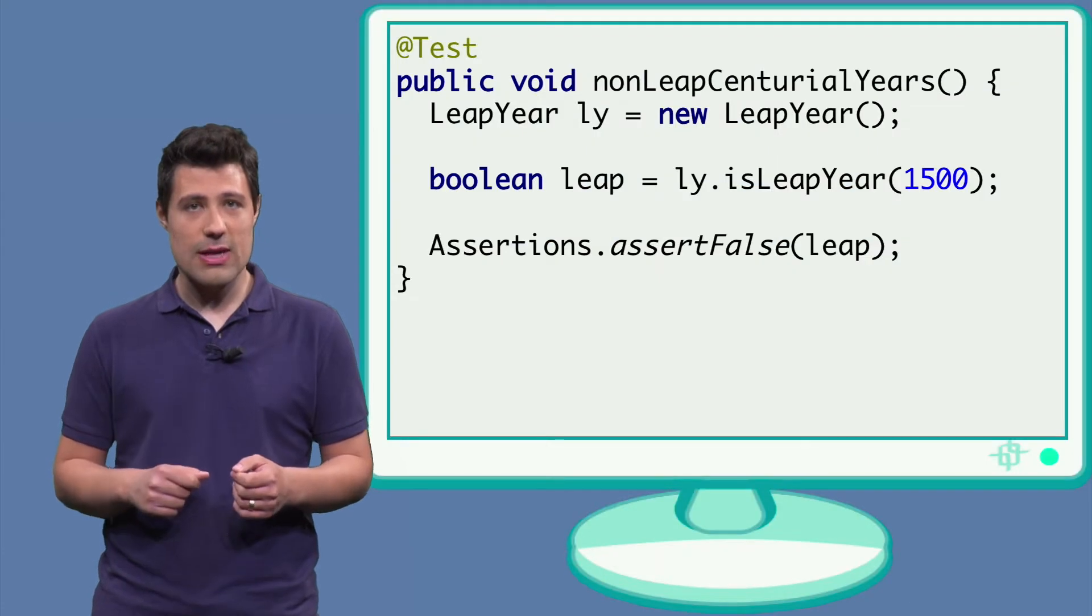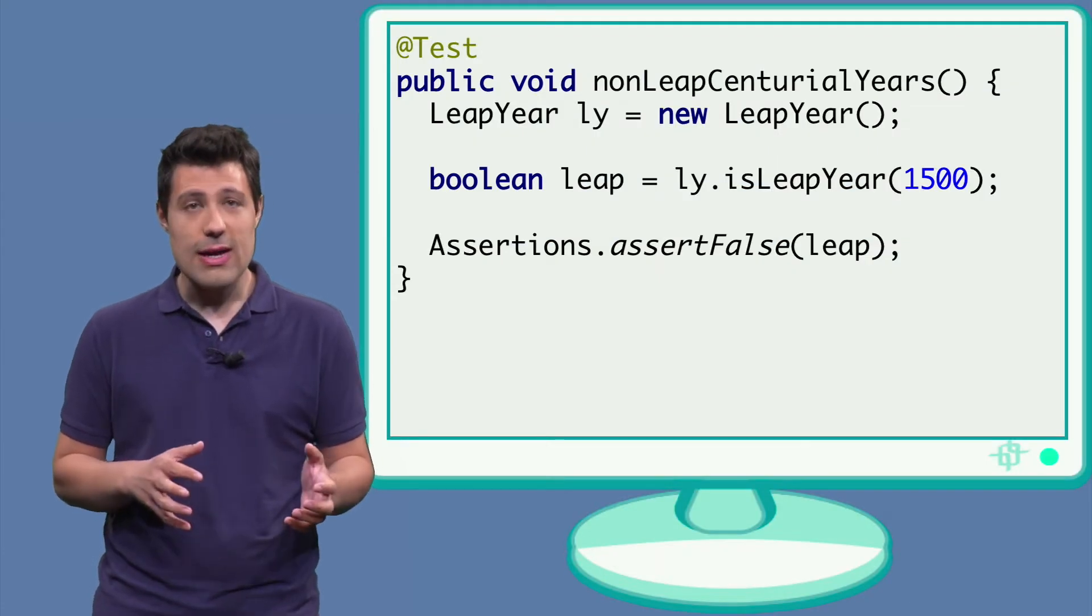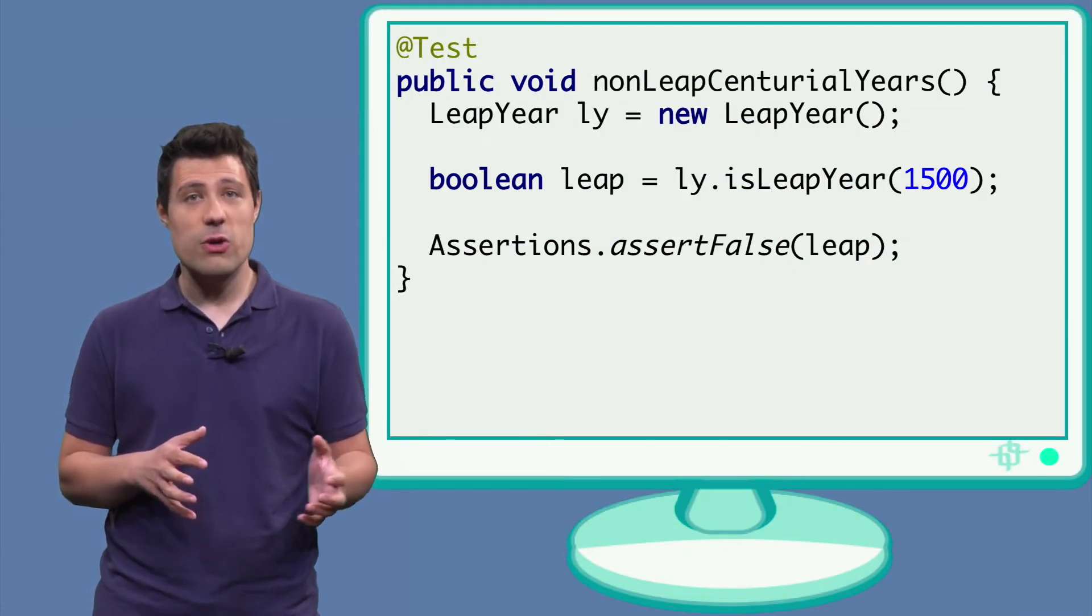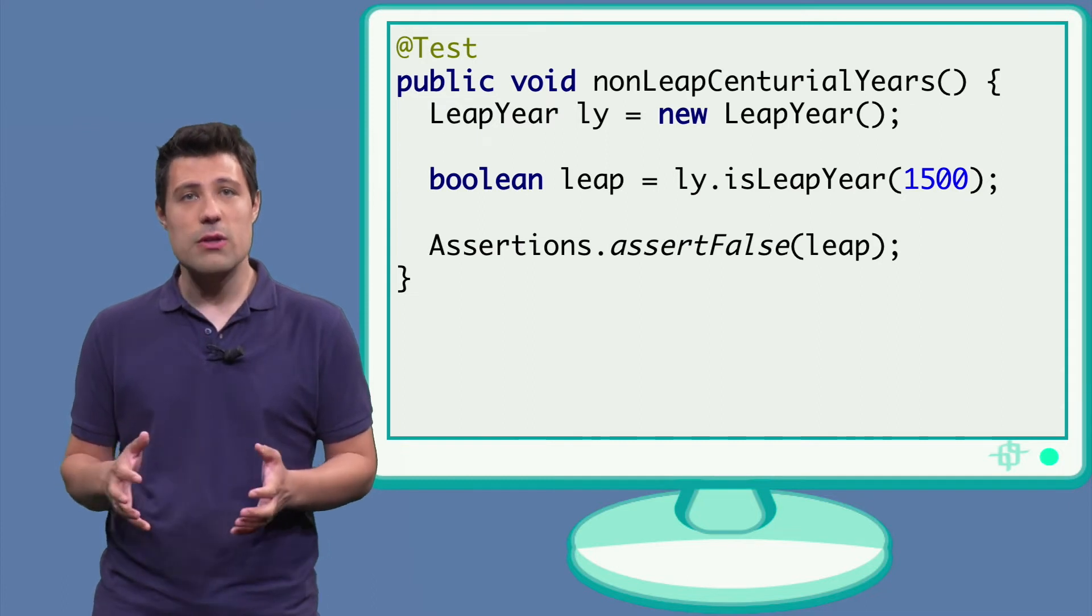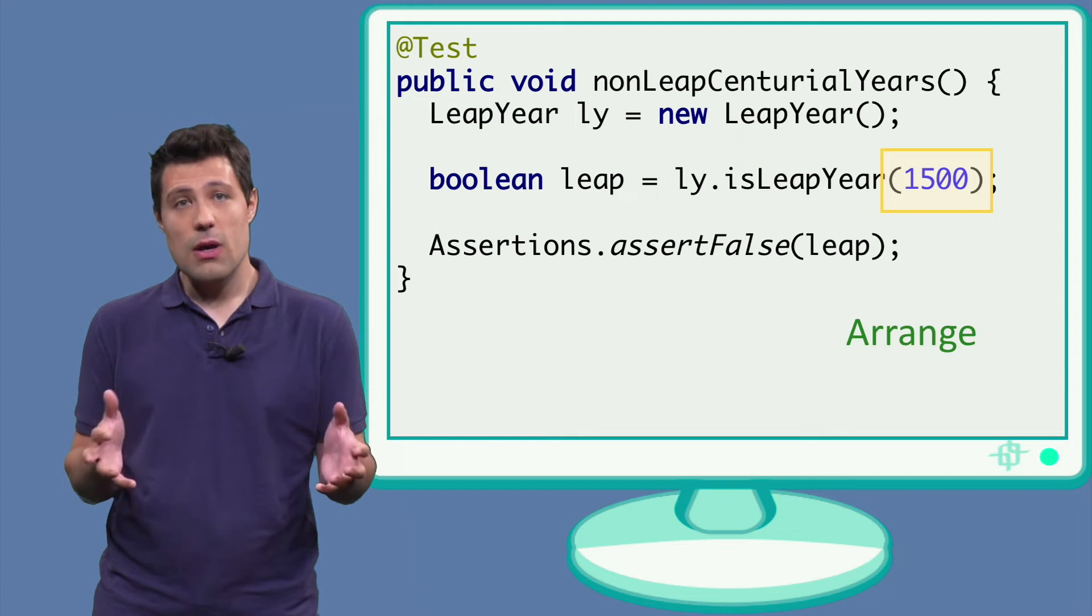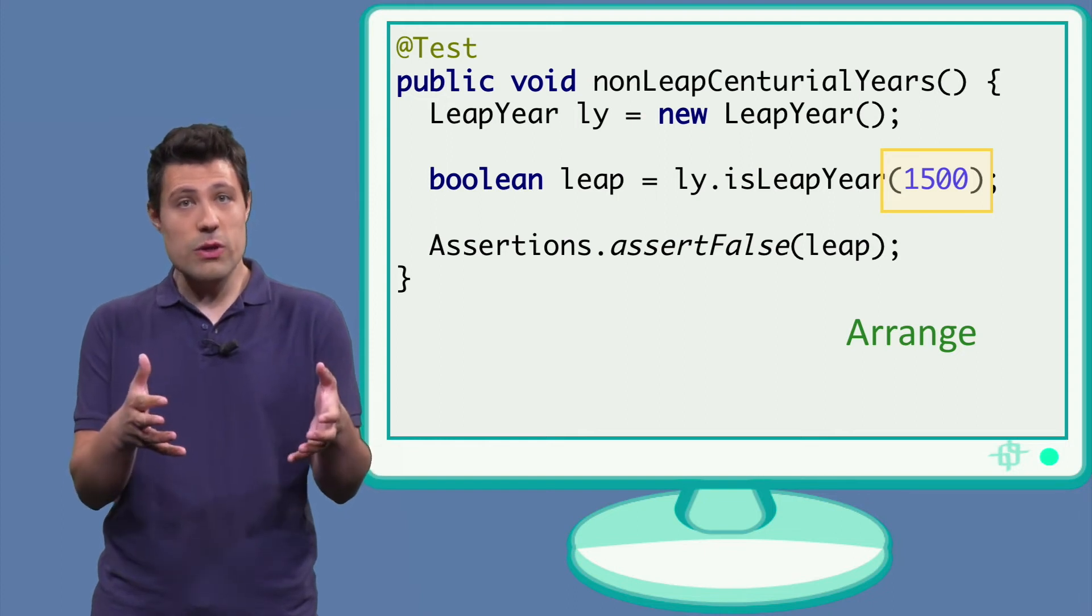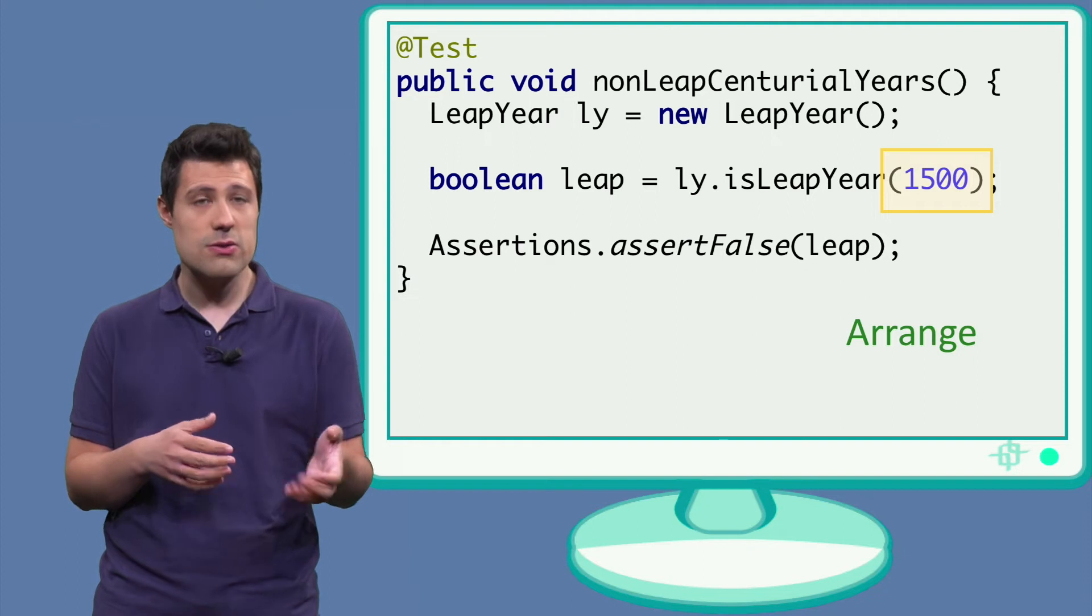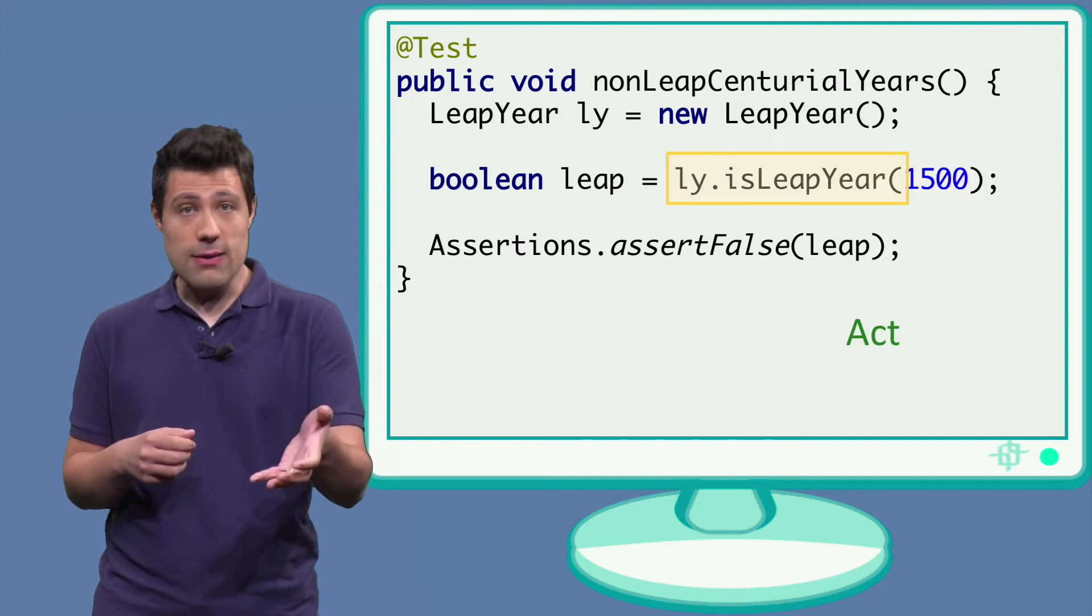Let's take as an example a test we wrote at the beginning of the course. This test code represents the case where years can be centurial, but not necessarily leap years. We always have the Arrange part, which is where we have the inputs we want to provide to the program in that specific test case. Then we Act.